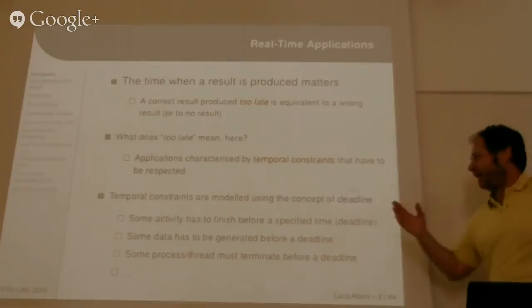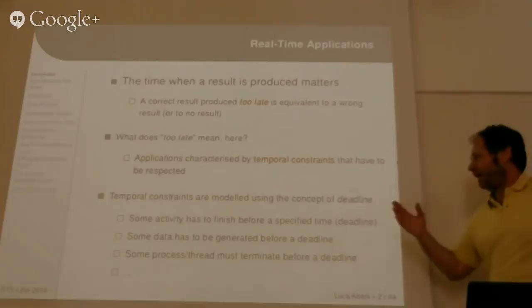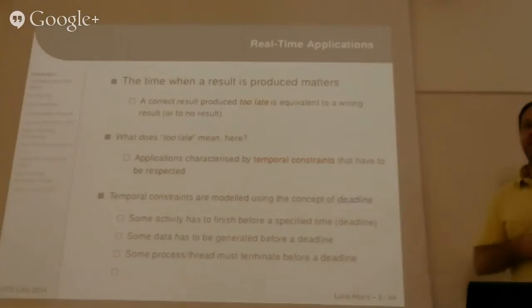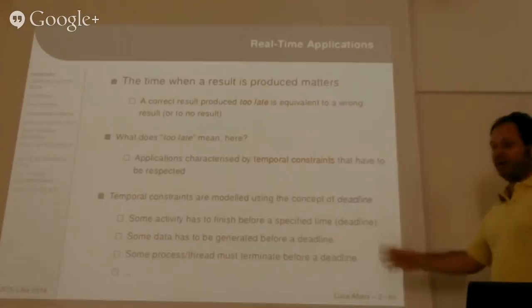A real-time application is an application for which it's not only important to generate correct results, but it's important to generate results at the correct time. A correct result which is generated too late is more or less useless. We introduce the concept of temporal constraints, or deadlines, to model what is 'too late'. In a real-time application, some activity has to terminate before a specified deadline, some data has to be generated or processed before a deadline, or some process or thread has to terminate before a deadline.